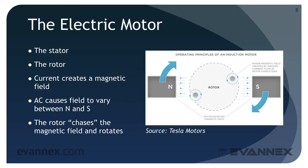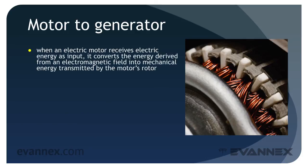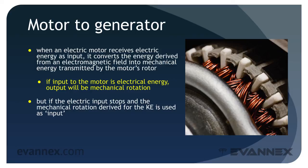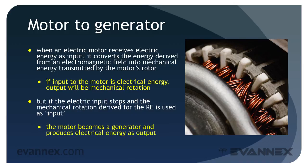One more important point: the electric motor exhibits an interesting duality — it can be a motor or it can be a generator. When an electric motor receives electrical energy as input, it converts the energy derived from an electromagnetic field into mechanical energy transmitted by the rotor. This provides torque — that is, rotational energy — that causes the drive wheels of a vehicle to rotate. If input to a motor is electrical energy, output will be mechanical rotation or torque. But if the electrical input stops and the mechanical rotation derived from kinetic energy is used as input, the motor becomes a generator and produces electrical energy as output.